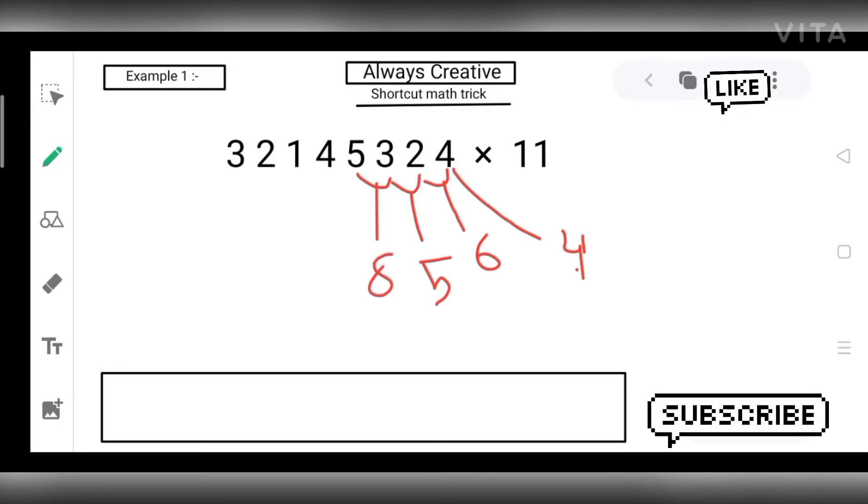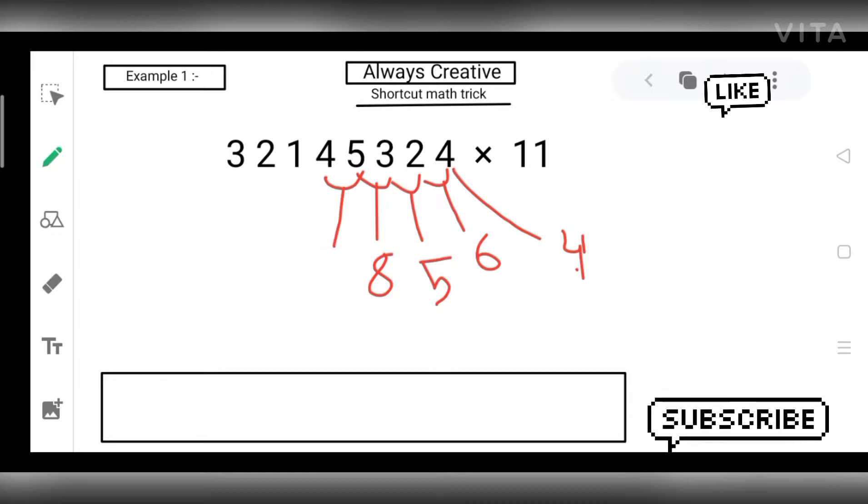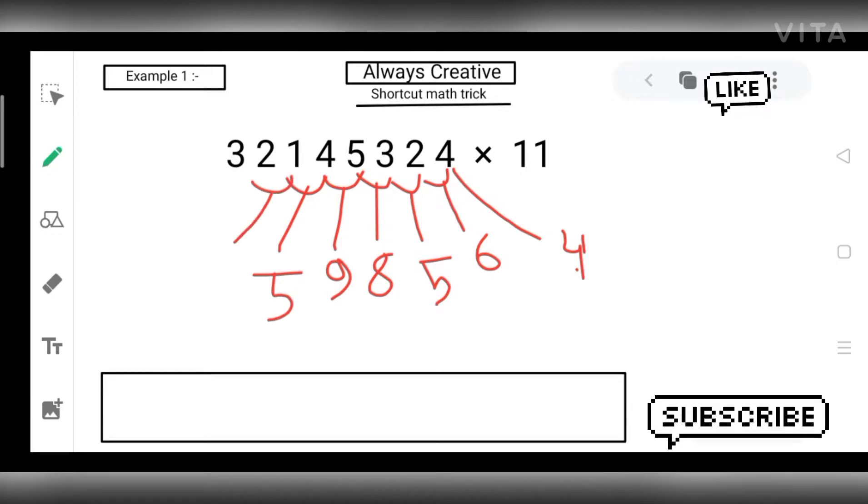Then 5 plus 4 is 9, then 4 plus 1 is 5, then 2 plus 1 is 3, and 3 plus 2 is 5.